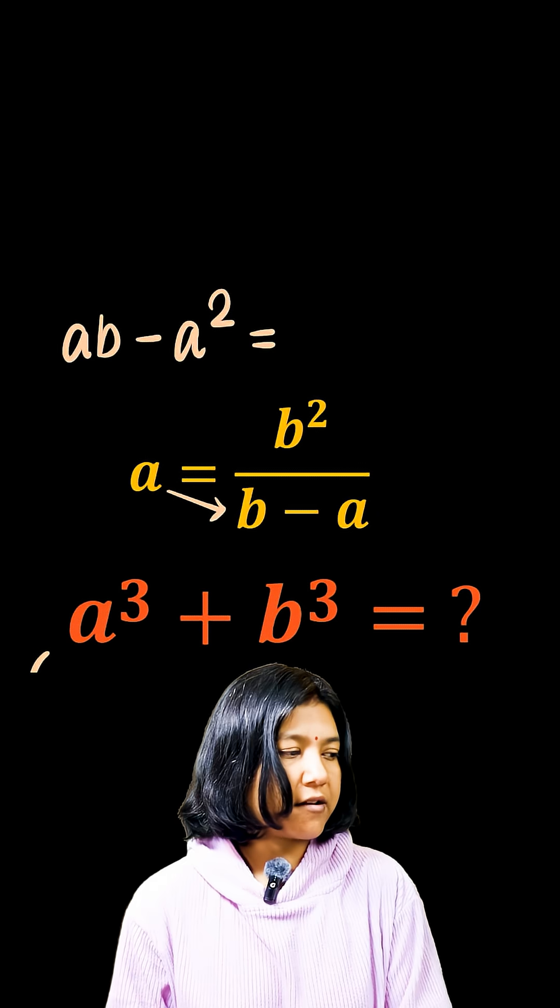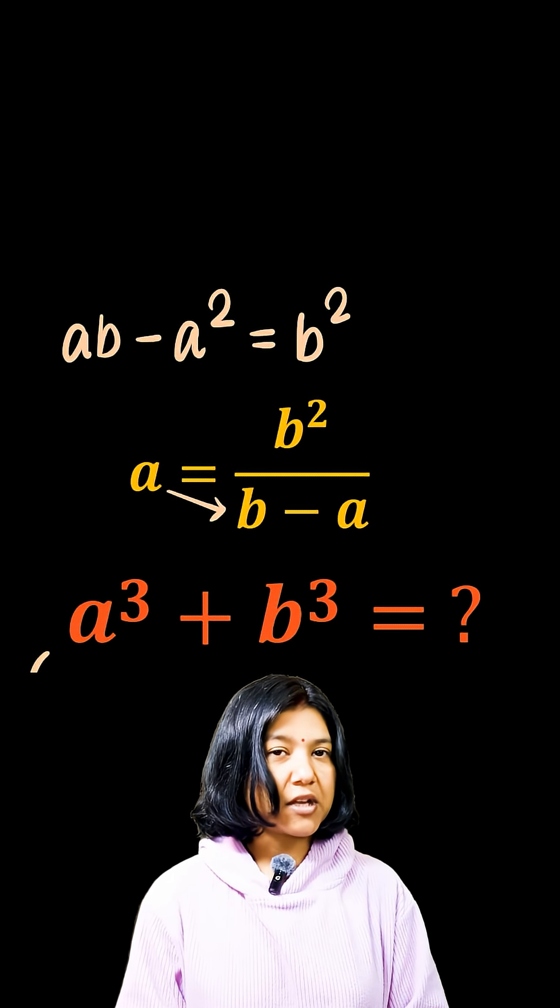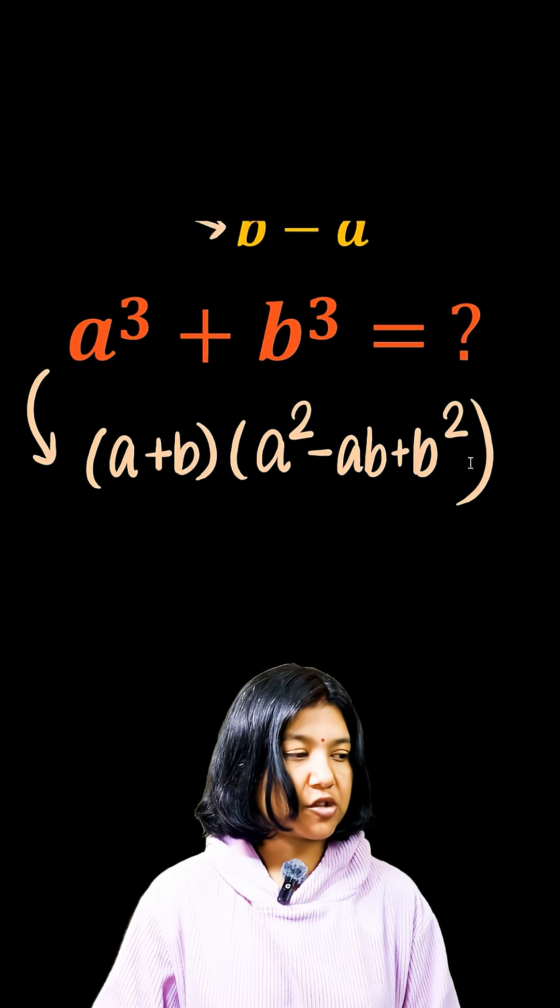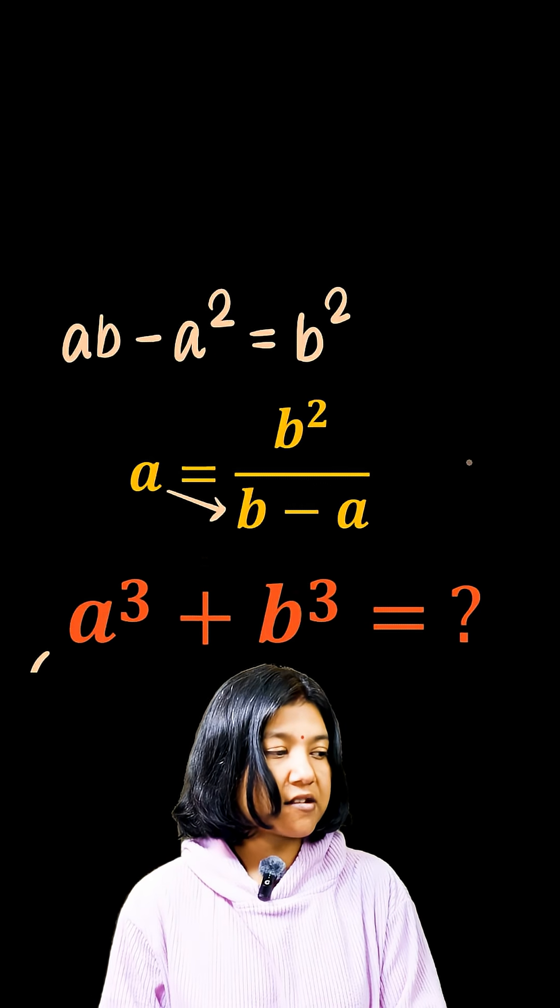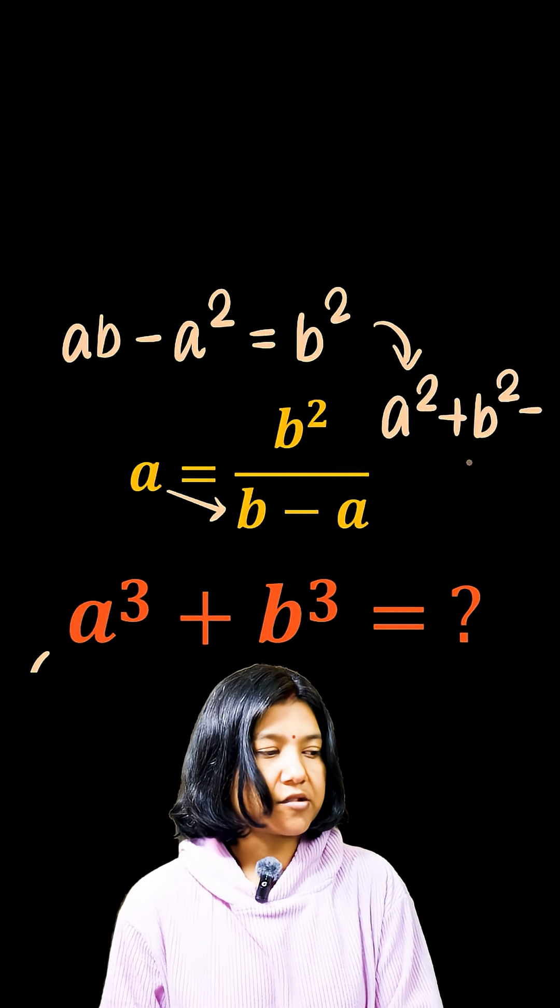ab minus a squared equals to b squared. Now this looks a little familiar to what we have in the factorization of the sum of cubes. You can write this otherwise as a squared plus b squared equals to ab.